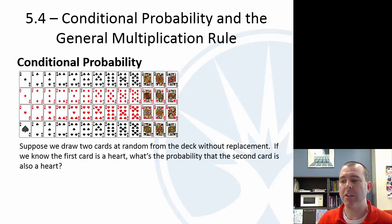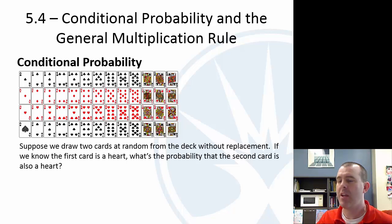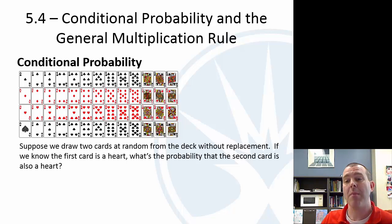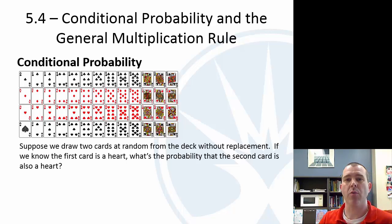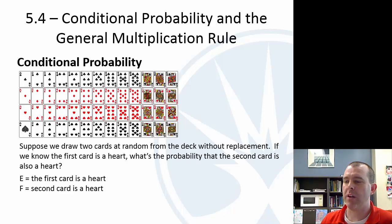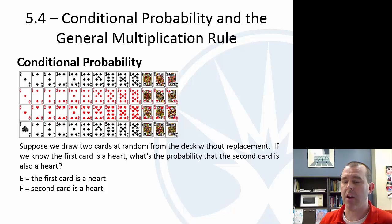Let me introduce conditional probability by way of an example with a standard 52-card deck. You have four suits: clubs, diamonds, hearts, and spades. Suppose we draw two cards at random without replacement — we draw a card, keep it out, and then draw another. The question is: if we know the first card is a heart, what's the probability that the second card is also a heart? We define E as the event the first card is a heart, and F as the event the second card is a heart.